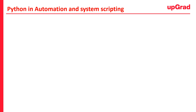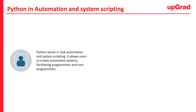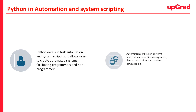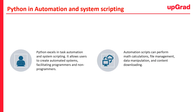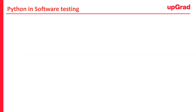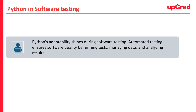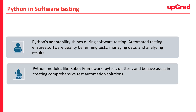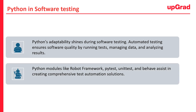Python excels in task automation and system scripting. It allows users to create automated systems, facilitating both programmers and non-programmers. Automation scripts can perform math calculations, file management, data manipulation, and content downloading. Python's adaptability also shines during software testing — automated testing ensures software quality by running tests, managing data, and analysing results. Python modules like Robot Framework, PyTest, Unittest, and Behave assist in creating comprehensive automated test solutions.